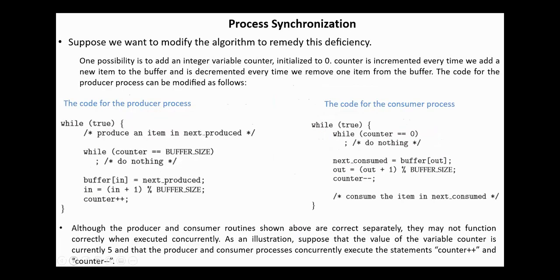Suppose we want to modify the algorithm to remedy this deficiency. One possibility is to add an integer variable counter initialized to zero. Counter is incremented every time we add a new item to the buffer and is decremented every time we remove one item from the buffer.